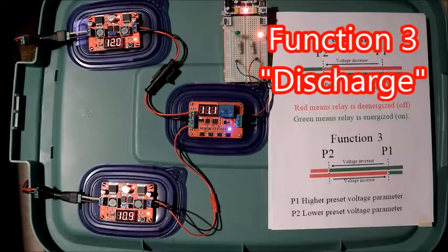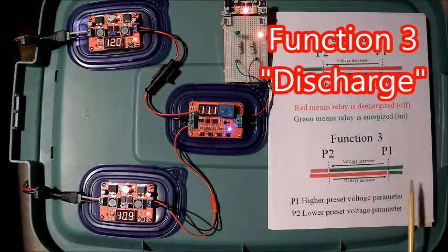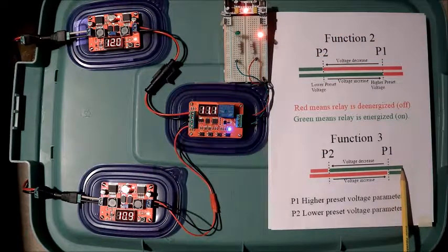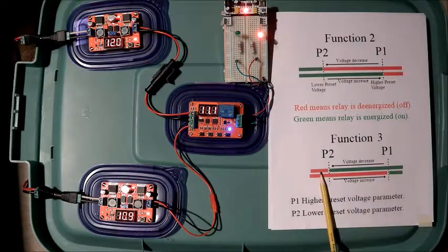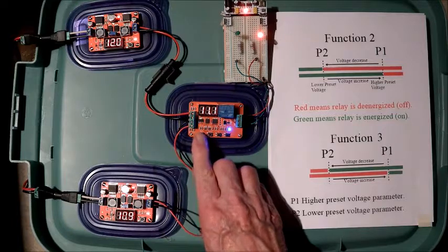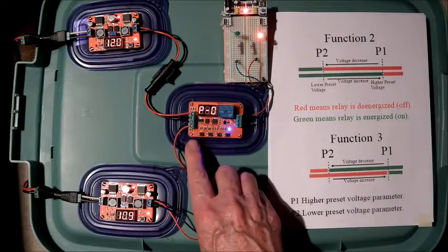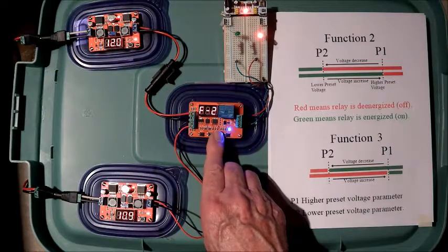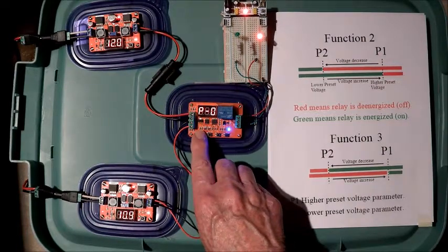Going to Function 3. Function 3 is the mirror of Function 2 in that the decreasing voltage we have the relay energized or on. When it reaches the lower value, it will turn off the relay. It'll stay off until it reaches the higher value. Going in and setting up for Function 3. At P0, I hit the Set button. I'm at Function 2. I will increase that to Function 3. Save it. Go back to Operational Mode.